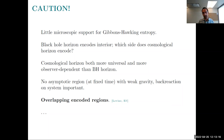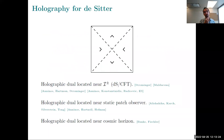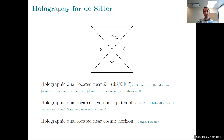That's my cautionary tale — I've warned you. Now I can proceed and ignore the warning signs. Let me give a little background on approaches to holography for de Sitter space. Here I've drawn the de Sitter Penrose diagram — it's a square, each time slice is a sphere, so space ends here and here. The conformal boundaries are at future and past infinity. These dashed lines are the event horizons appropriate for an observer living at this point.